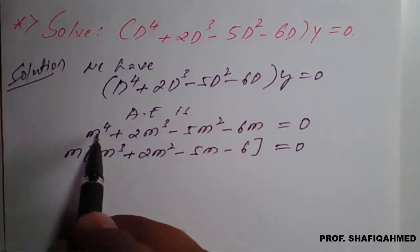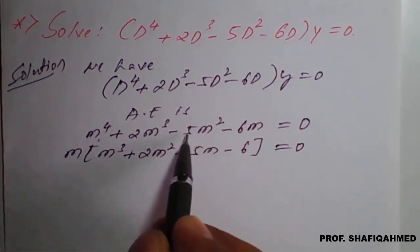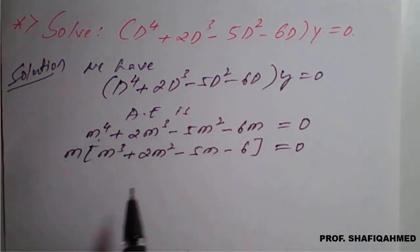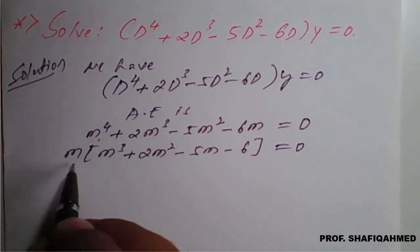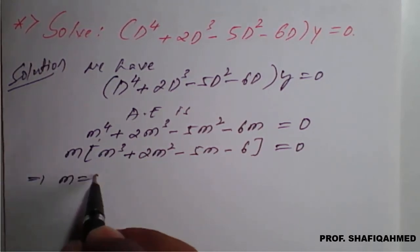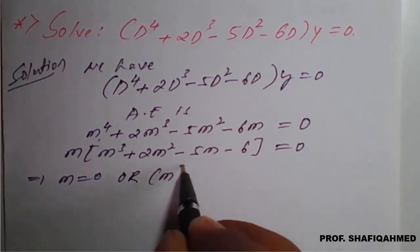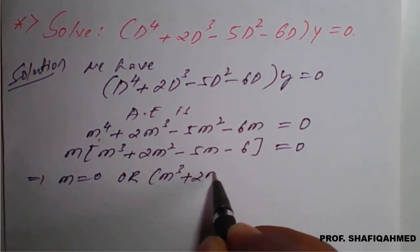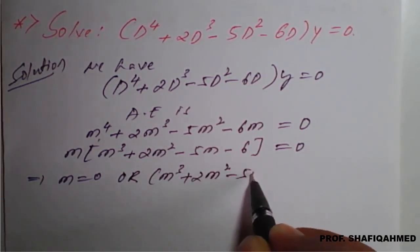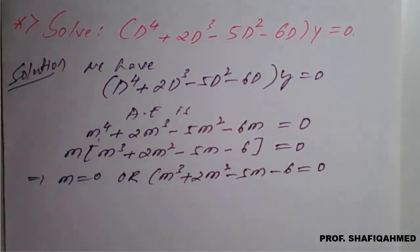We have left with m³ + 2m² - 5m - 6 equal to 0. Therefore, we will equate this to 0, which implies m equal to 0 or m³ + 2m² - 5m - 6 equal to 0.